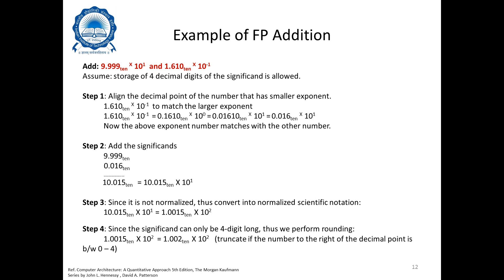In step 2, we add the significands: 9.999 + 0.016 = 10.015 base 10. Represented in scientific notation this is 10.015 × 10¹. Since this is not normalized, we perform normalization — shifting the number to the right and incrementing the exponent, giving 1.0015 × 10².